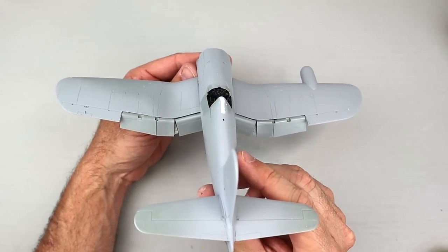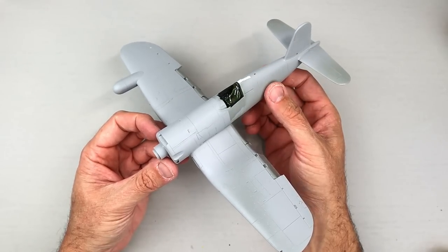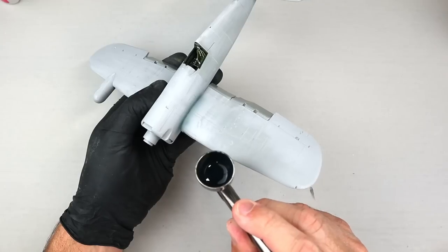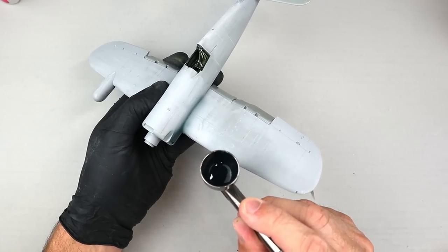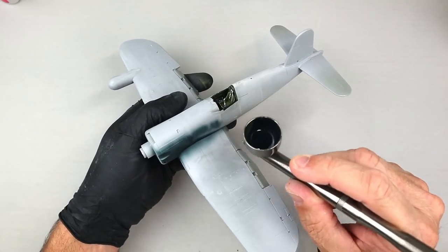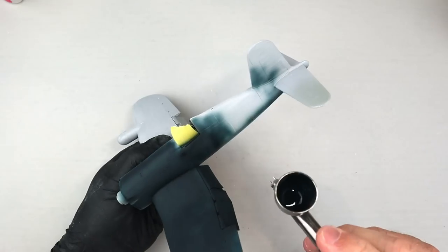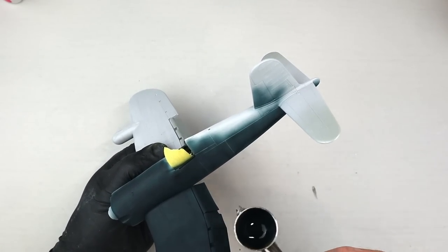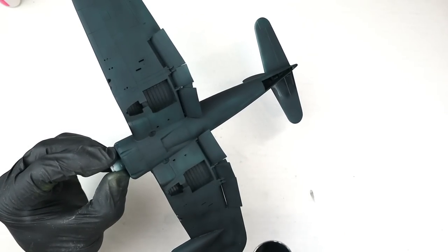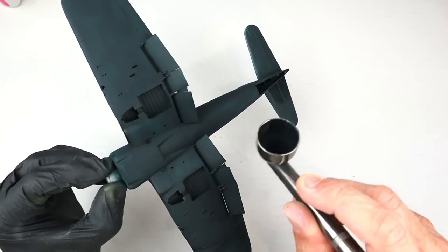Since the Corsair was going to be finished in a dark sea blue I didn't bother with any pre-shading. For the sea blue I used a custom mix of Tamiya dark sea blue and Tamiya flat blue mixed at a ratio of about six to one. I made sure to spray the blue into the wheel well areas and eliminate that interior green that had been applied by the kit's previous owner.